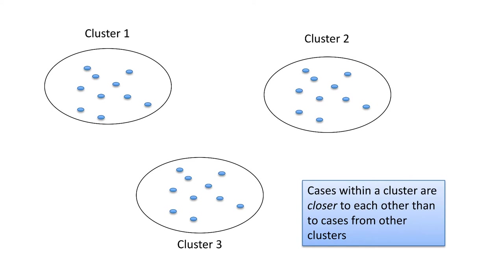The reason we try to cluster objects is to reduce complexity. It's easier to talk in terms of three clusters than in terms of a thousand different objects. If you tell me that a dataset basically consists of three sets of similar objects, then I can think of the thousand just by thinking about the three.